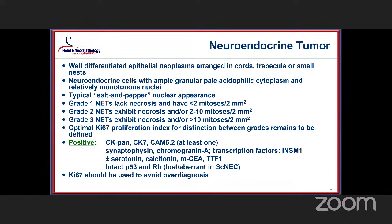For neuroendocrine tumors, you need epithelial markers such as CAM5.2, pancytokeratin, OSCAR, or CK7, and neuroendocrine markers such as synaptophysin or chromogranin, transcription factors like INSM1, and potentially aberrant expression with calcitonin or TTF1. For the neuroendocrine tumor category there is an intact P53 and intact retinoblastoma — those are lost when you get to the carcinoma category. Performing the retinoblastoma can be quite helpful along with Ki-67 when dealing with NET grade 2 or 3 to better characterize the tumor type.